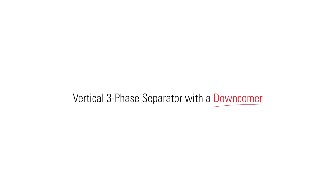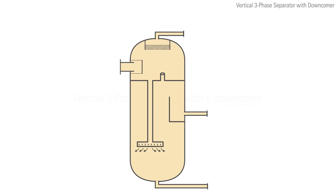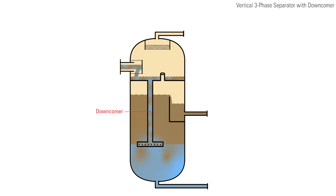In a vertical three-phase separator with a downcomer, flow enters the vessel through the inlet and is immediately met by an inlet diverter to help separate the bulk of the gas. A downcomer sends the liquid through the oil-water interface to keep from disturbing the fluid in the vessel. The downcomer outlet, or spreader, is located at the oil-water interface.